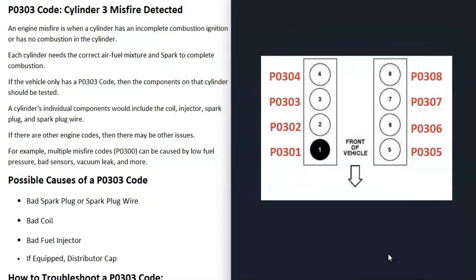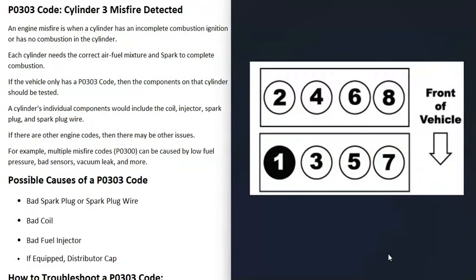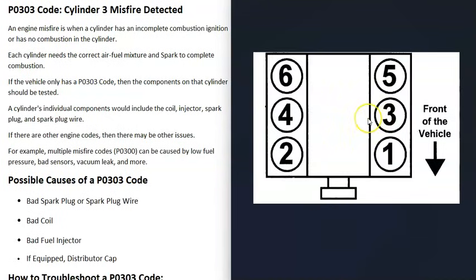A P0303 code is going to point to the number three cylinder. If you had a P0301 code, it would be number one; a P0302 code would be number two, and so on. If you Google your engine's firing order or cylinder location, you can usually find the number three cylinder on your particular engine in Google Images, since there will be some differences in how it's located.